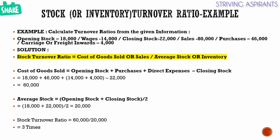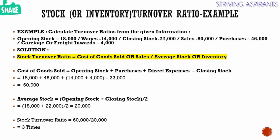Cost of goods sold can also be calculated as opening stock plus purchases plus direct expenses minus closing stock. Here we have opening stock 18,000 plus purchases 46,000 plus direct expenses which include wages 14,000 and carriage inwards 4,000. We add all these amounts and then deduct the closing stock amount which is 22,000, so we will get the cost of goods sold amount of 60,000.